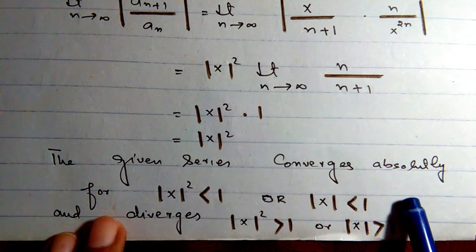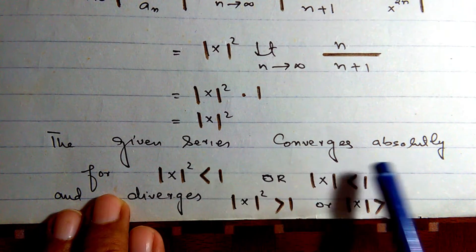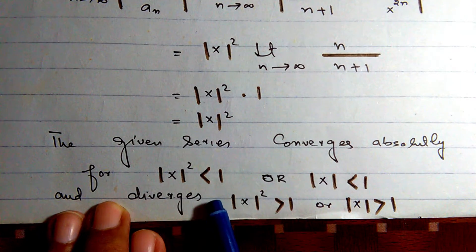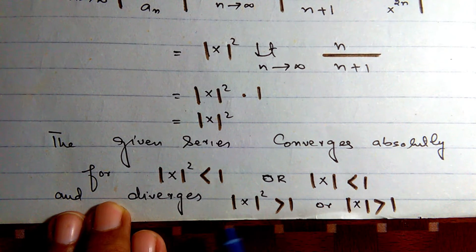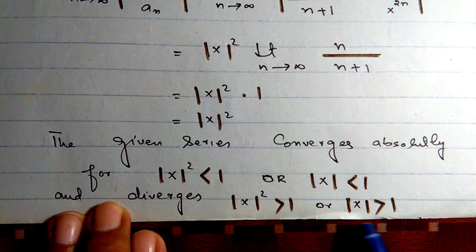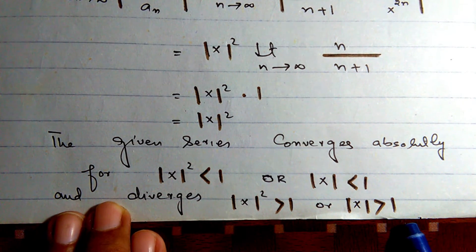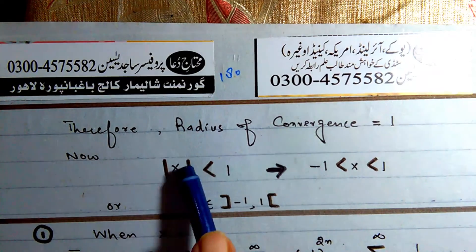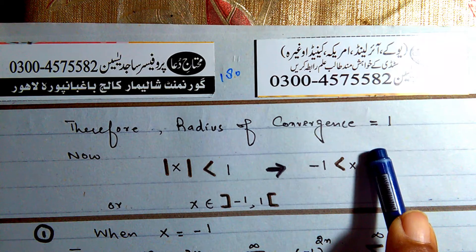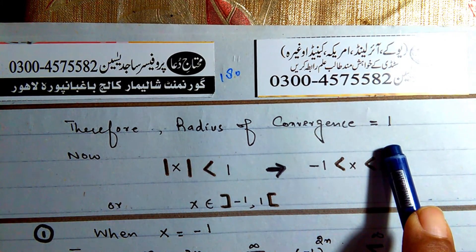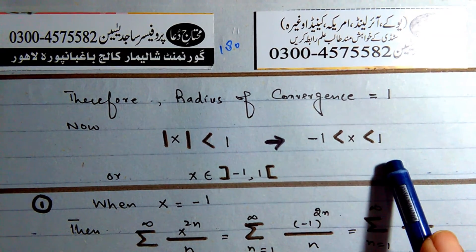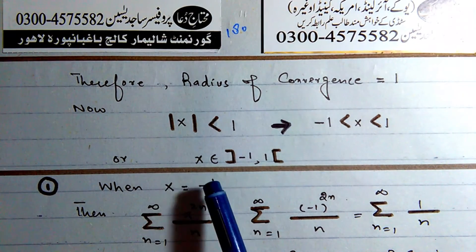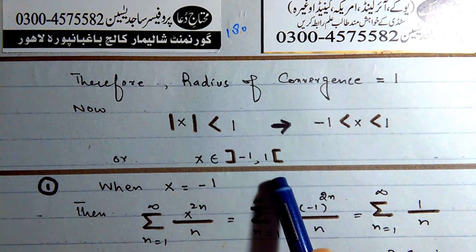The series converges absolutely when |x|² < 1, i.e., |x| < 1, and diverges when |x| > 1. Therefore the radius of convergence is 1, and x belongs to the open interval (-1, 1).